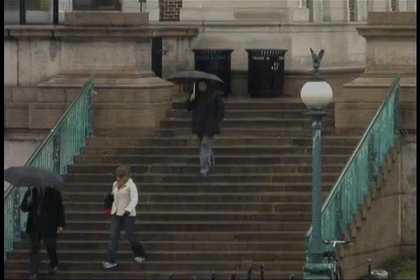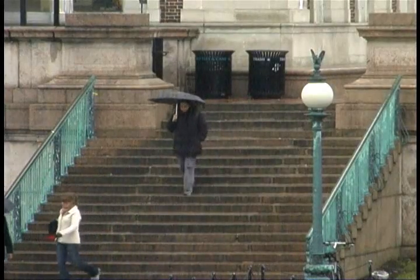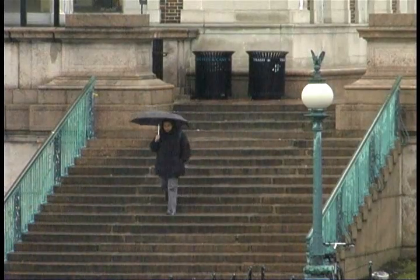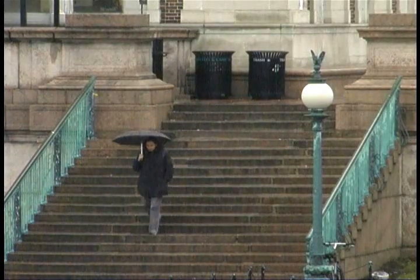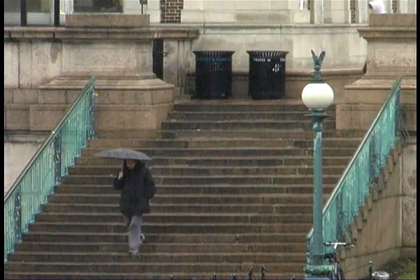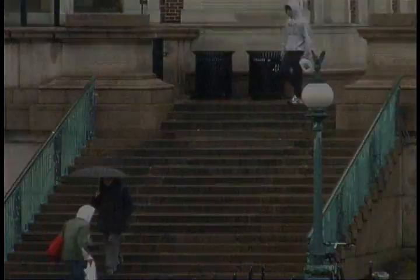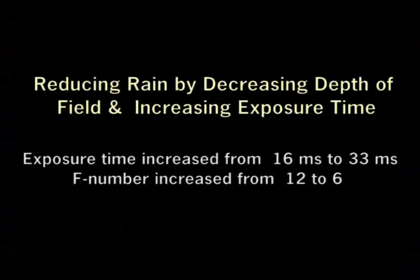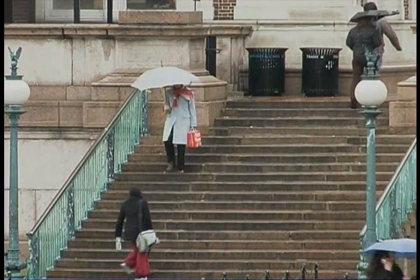Now we show a scene with moderate depth variation and motion. Our analysis shows that rain can be reduced in such scenarios by increasing exposure time to 33 milliseconds and decreasing the F number to 6.